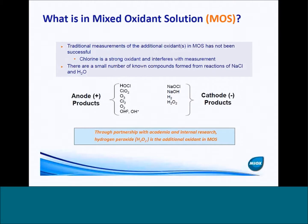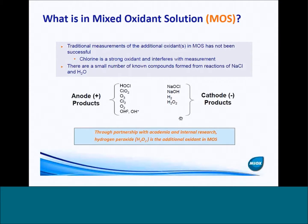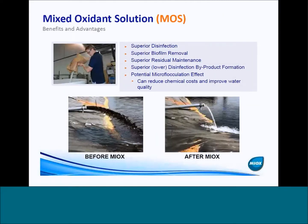You get the question: what causes those differences? What's in mixed oxidant solution that's different than a hypochlorite solution? Traditional measurements of those additional oxidants have not been successful, primarily because chlorine is such a strong oxidant in the thousands of milligrams per liter — it interferes with measurements and with researchers wanting to put samples in their multi-million dollar pieces of measurement equipment. There are a small number of known compounds formed from reactions of salt and water, including anode and cathode products. We've partnered with academics over the past 14 years at MIOX and done a tremendous amount of internal research, and we've come to the conclusion that hydrogen peroxide is the additional oxidant in mixed oxidant solution. Because of that additional oxidant, we get some co-oxidation effects that provide benefits and advantages for our customers.